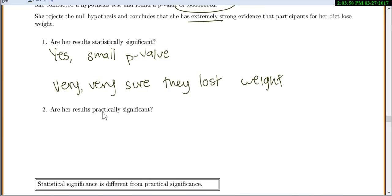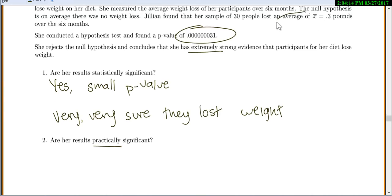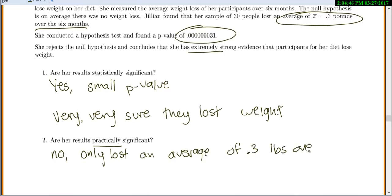So now we know that our results were statistically significant, meaning that we're sure, we're not positive, but we're fairly sure that these people lost weight, that the average weight went down. But now we want to know are her results practically significant? So practically significant means would it make a difference in real life, would it actually matter to a person? And now, so for that, let's go back up and see. Well, how much did they actually lose? They lost an average of 0.3 pounds over six months. Now, can you imagine only losing 0.3 pounds over six months? Is that worth it? I would say probably not. I don't want a diet to only lose 0.3 pounds in six months.